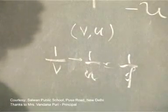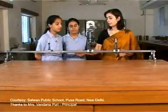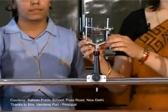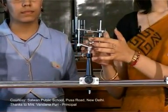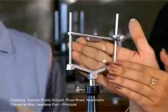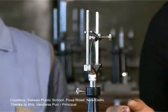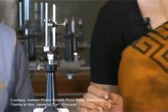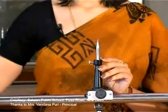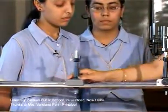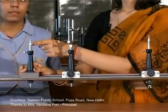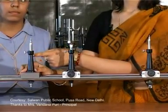Now let us move on to doing this experiment on the optical bench. This is a convex lens — you can easily identify it by touching it, as it will appear thicker at the center compared to the edges, and it gives an enlarged image of whatever object lies beneath it. This needle will act as the object, whereas the needle on the other side of the lens will act as the image needle, helping to locate the position of the image.